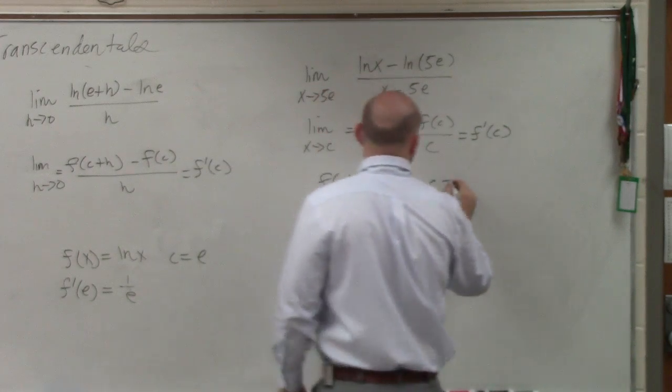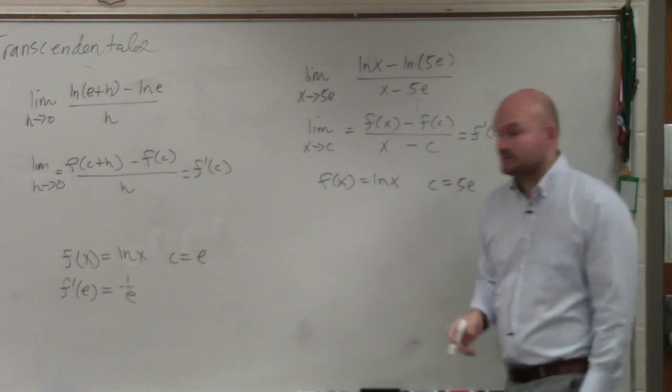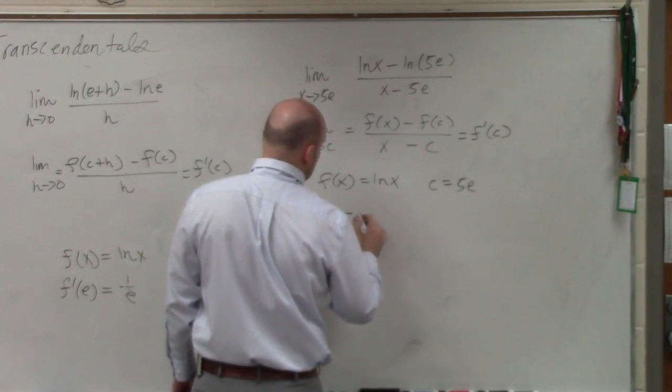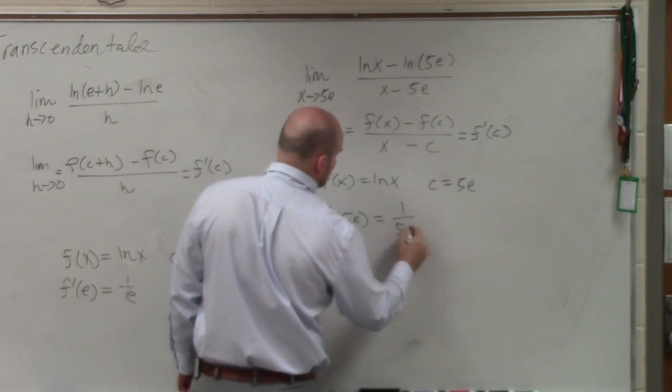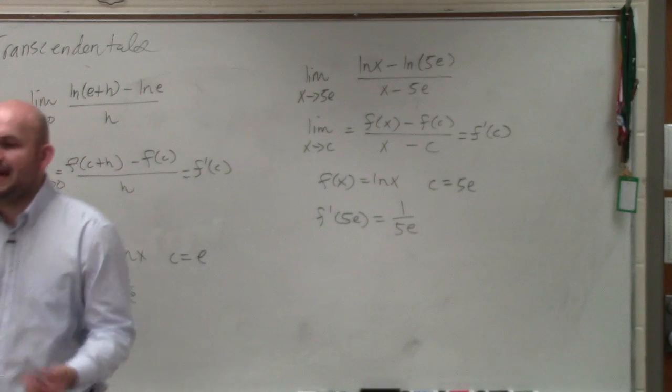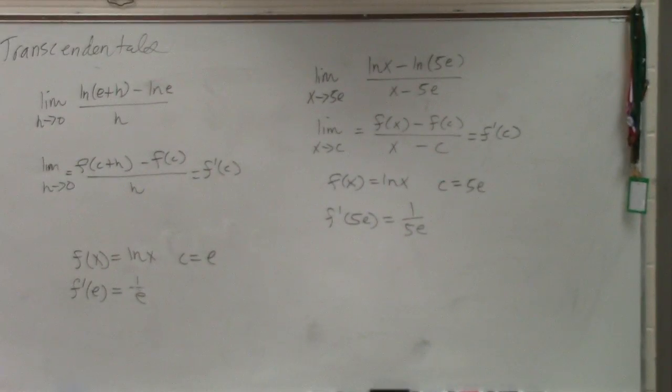And my c is equal to 5e. So now I'm just doing the exact same thing. f prime of 5e is equal to 1 over 5e. OK? This is the last limit definition that we discussed in this class.